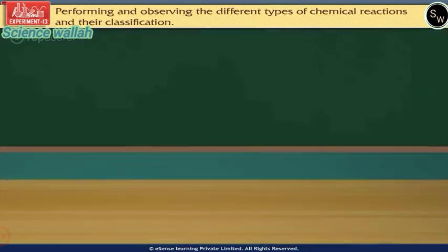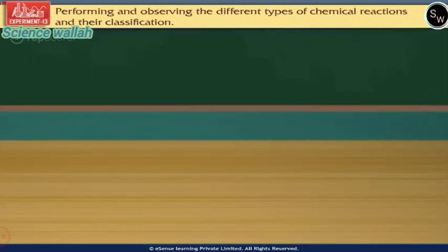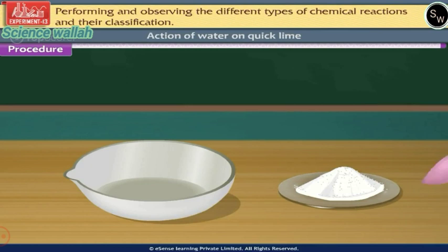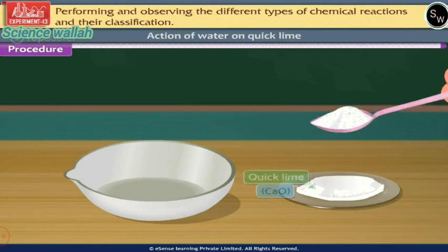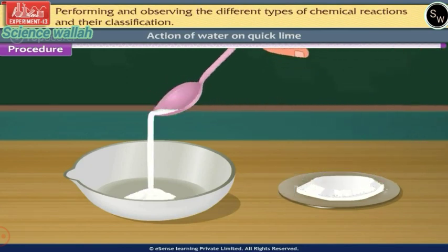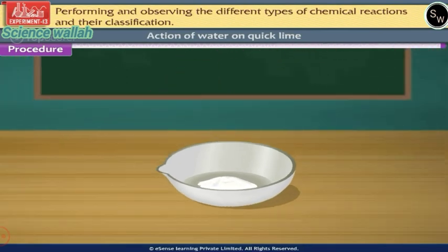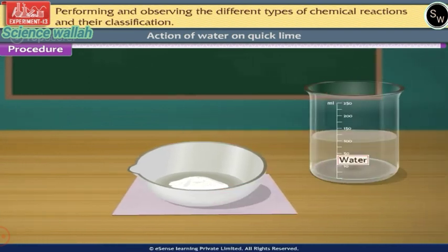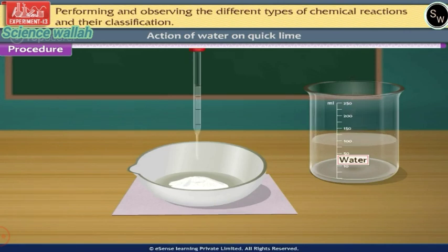Let us begin with the first chemical reaction: action of water on quick lime. Procedure: Take about 10g of quick lime in a clean china dish. Place the china dish on an asbestos sheet. With the help of a dropper, add some drops of water on quick lime in the dish.